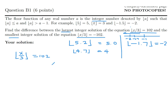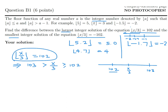Let's start with ⌊x/3⌋ = 102. That means what is inside the bracket has to be greater than or equal to 102, according to the definition, but it has to be less than 103. So x/3 is in the interval [102, 103). Multiplying through by 3 gives 306 ≤ x < 309. For this equation we want the largest, so the largest integer would be x = 308.